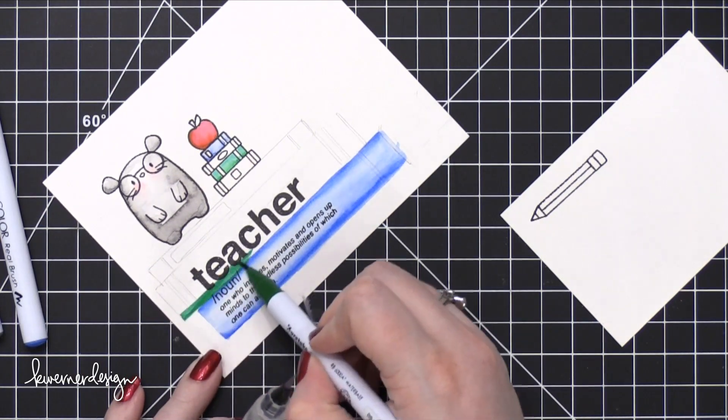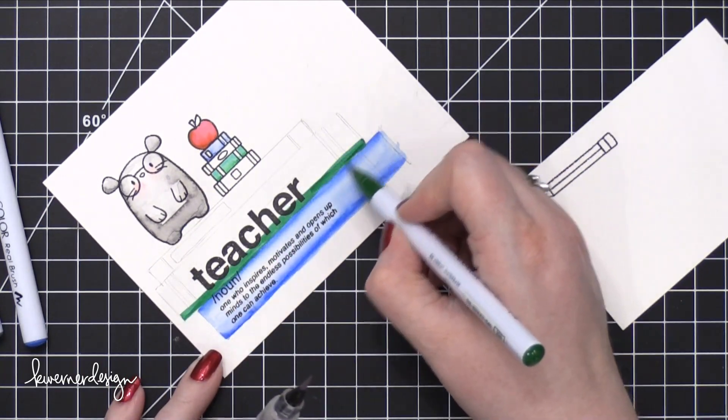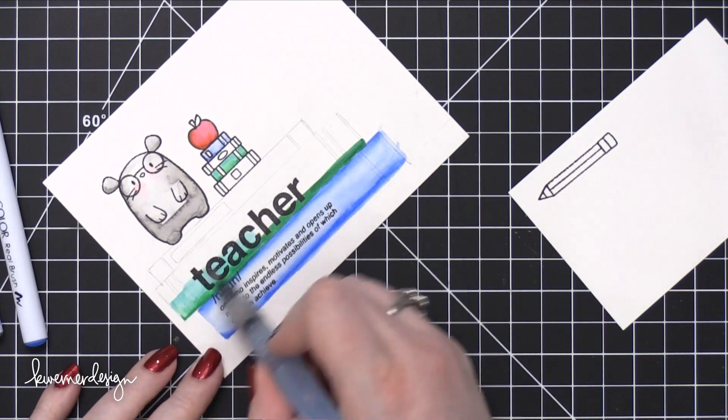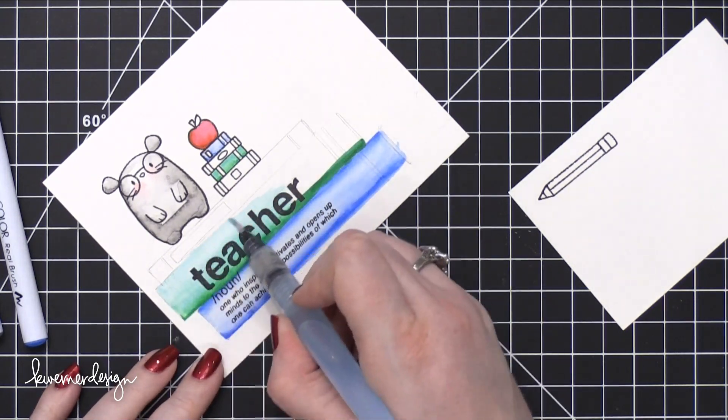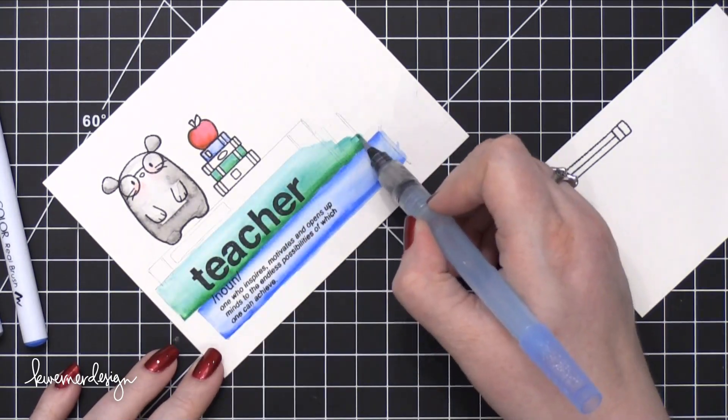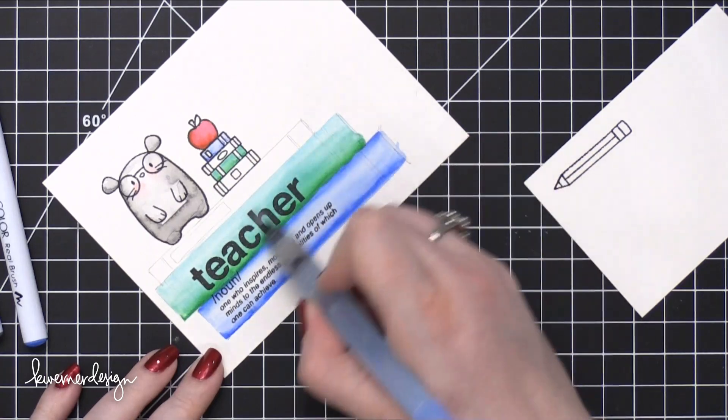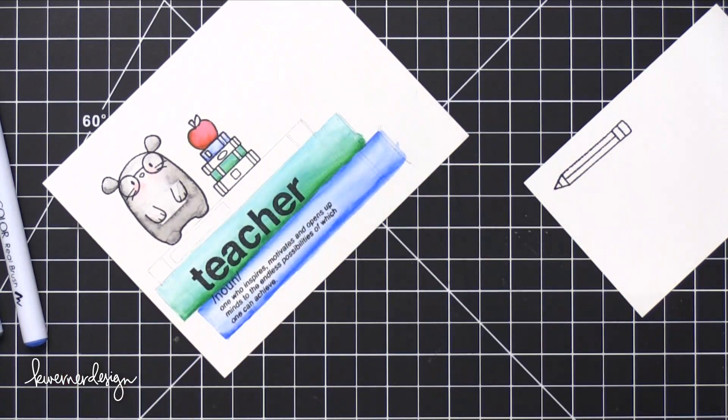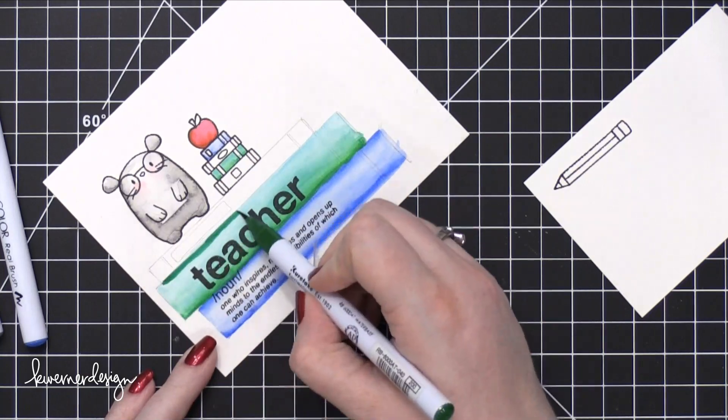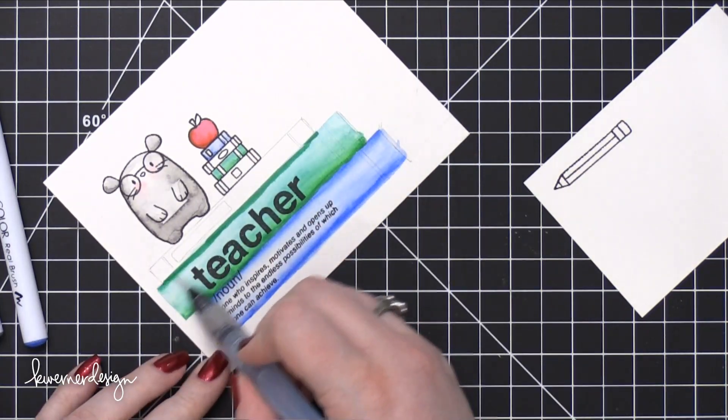At one point I was thinking about white heat embossing the teacher definition stamp, but then I decided not to because I wasn't sure how dark the watercoloring would be. And I also wanted to add some gold accents onto the books. And I thought maybe that white might be a little bit distracting.